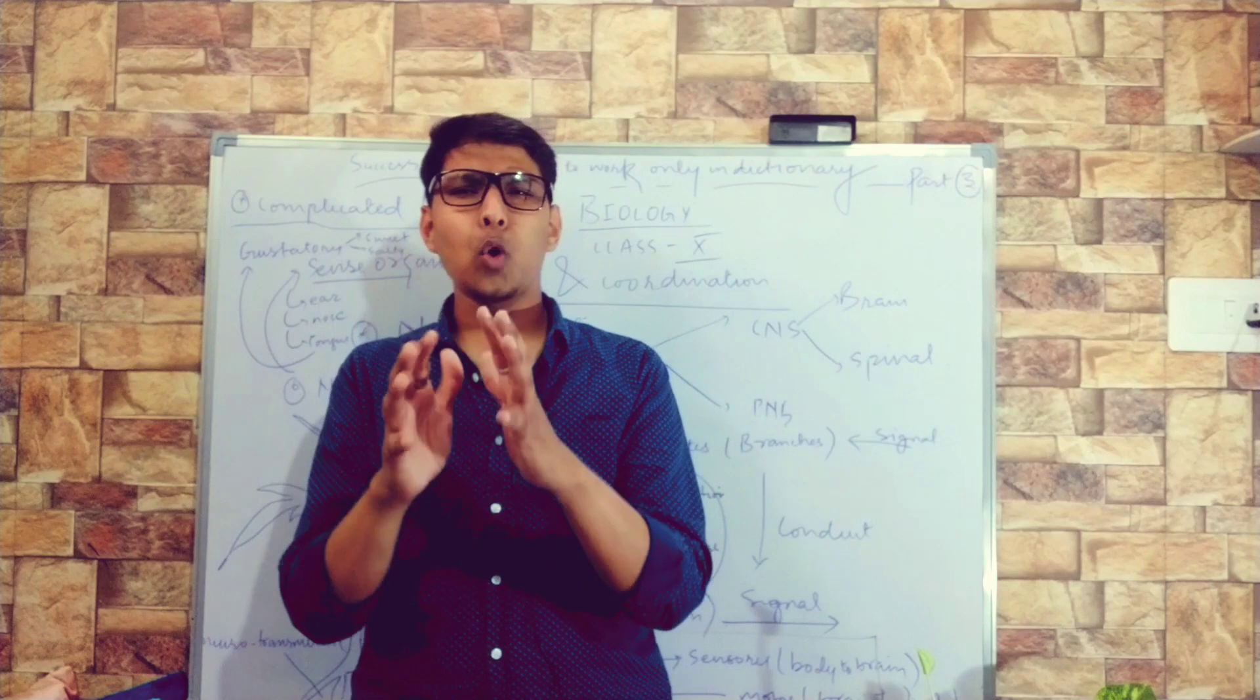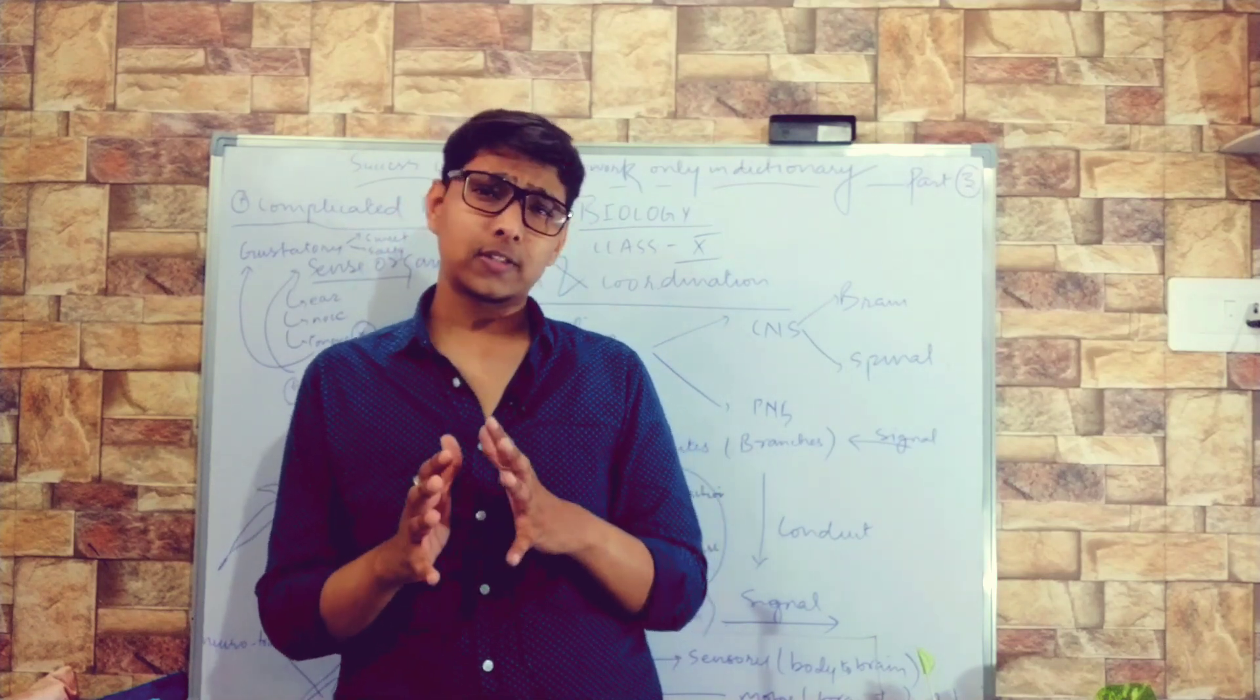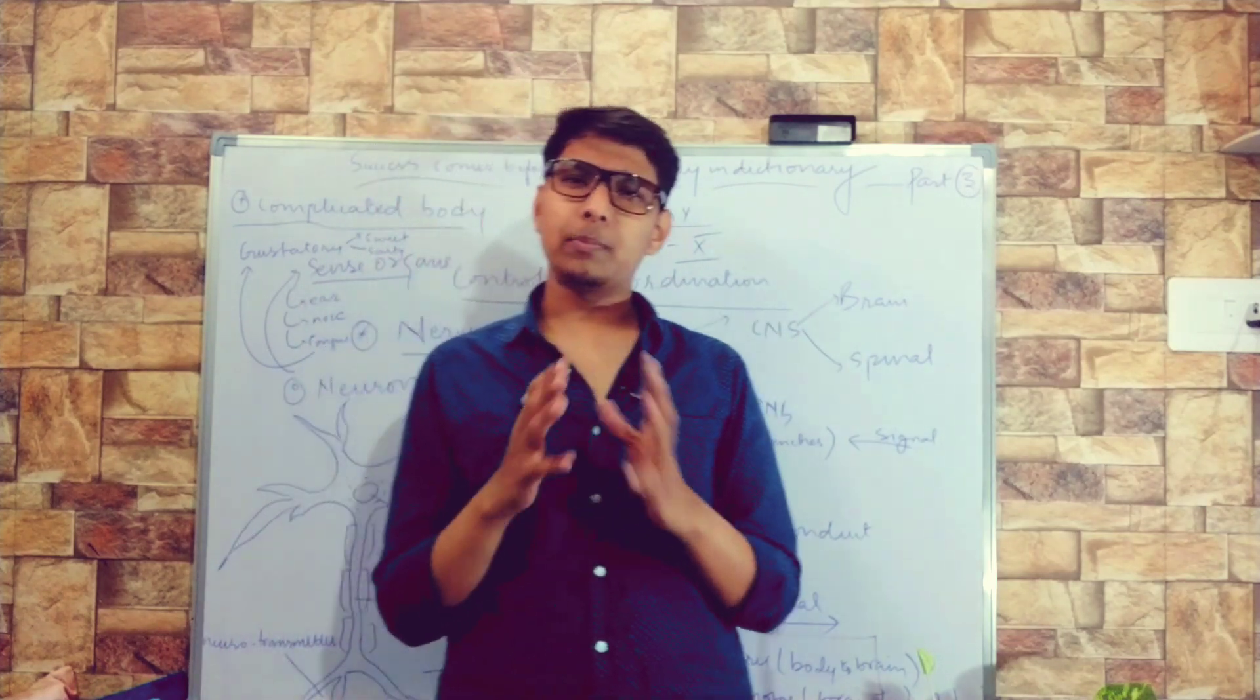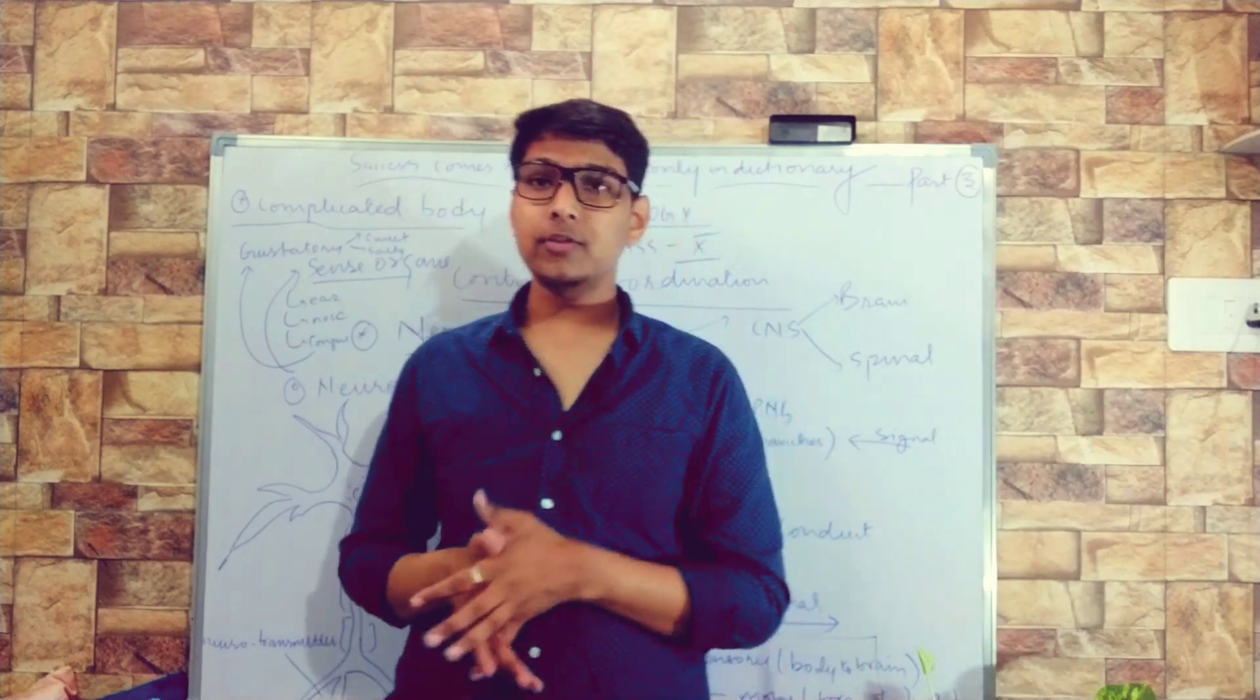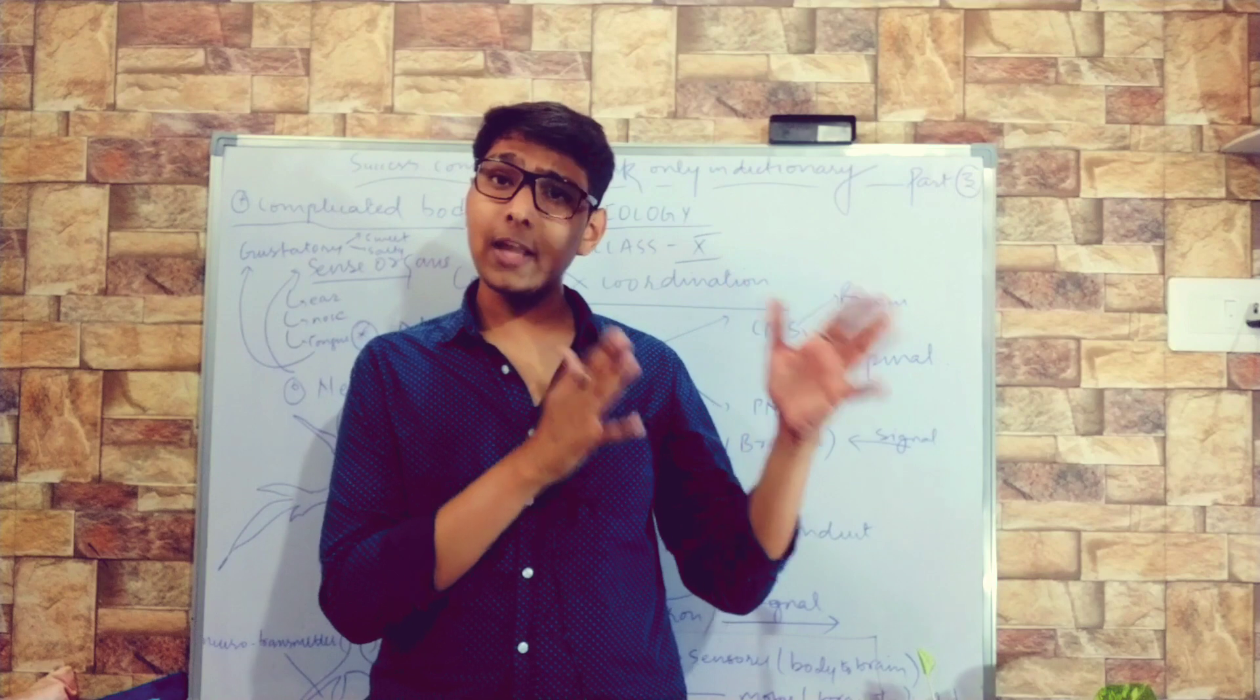Nervous system is what? It is the most important system of our body which consists of bundle of nerves forming CNS and PNS. Central nervous system and peripheral nervous system. Central nervous system consists of brain and spinal cord.